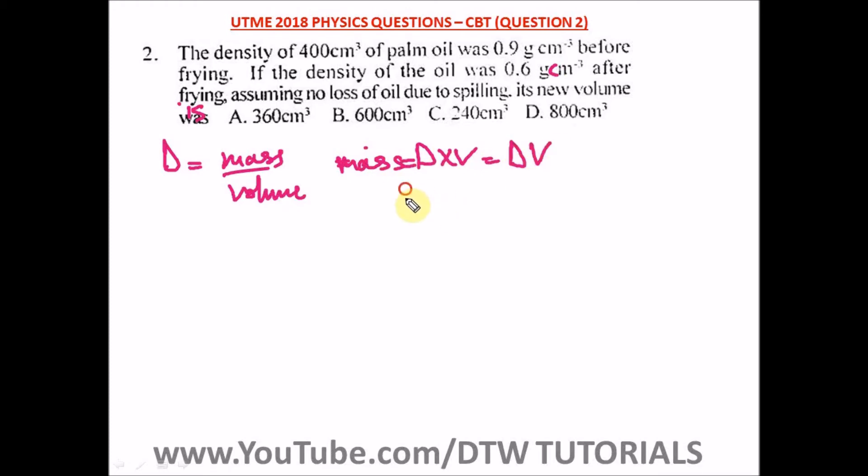So D1 V1 will be equal to what? D2 V2. That is the mass before frying will be equal to the mass after frying. So we have this. So the question says find the new volume. That's what we're looking for, V2.